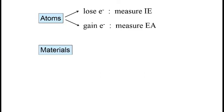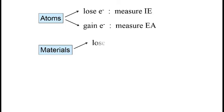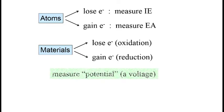When we deal with materials, the language changes. When materials lose an electron, we describe it as an oxidation. When they gain electrons, we describe it as a reduction. And instead of measuring an energy, we measure the potential for the process.